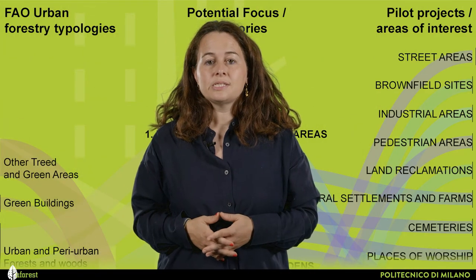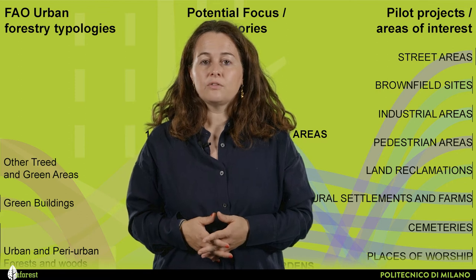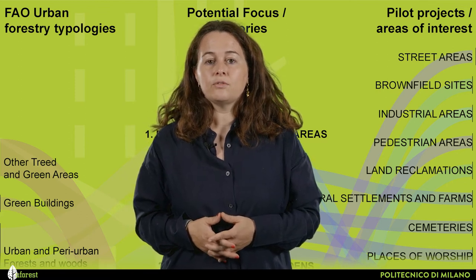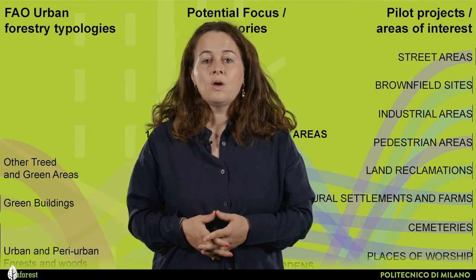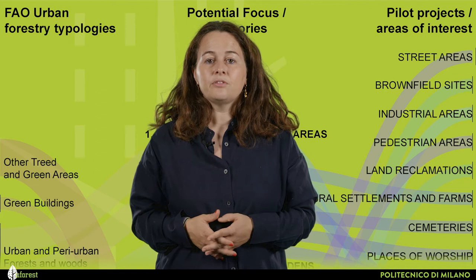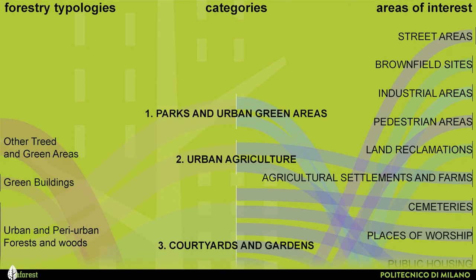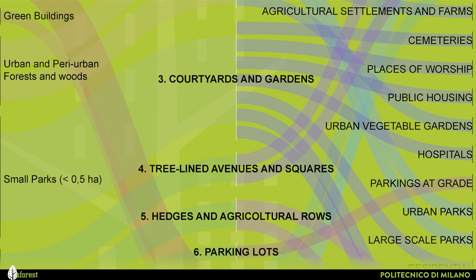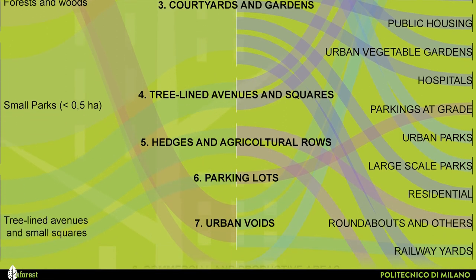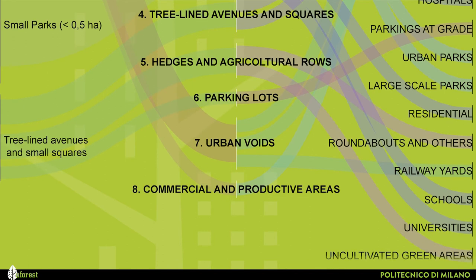Therefore, we need to better understand the potential loci included within the typologies. With the ESTAMI project, which has the objective of increasing the natural capital of the metropolitan area of Milan by adding 3 million trees by 2030, we enlisted those particularly relevant within the metropolitan area: parks and urban green areas, urban agriculture, courtyards and gardens, tree-lined avenues and squares, hedges and agricultural roads, parking lots, urban voids, and commercial and productive areas.